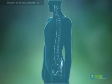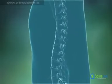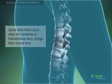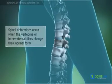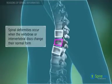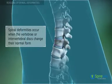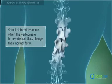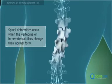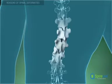Normally, the vertebrae of a healthy spine are shaped like a cylinder and are stacked one on top of each other with intervertebral discs between them. Spinal deformities occur when the vertebrae or intervertebral discs change their normal form. These conditions can be caused by different problems and diseases.